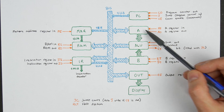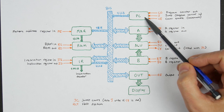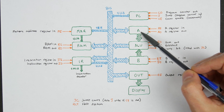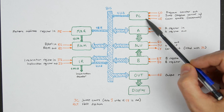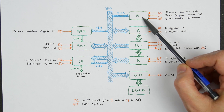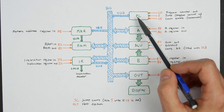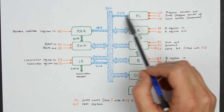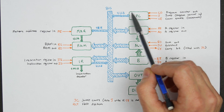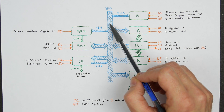In many ways the program counter also works a lot like a register, like the A register or B register — it stores a value. Unlike a general purpose register, the value the program counter stores always has a specific meaning: it's the address of the next instruction we're executing. But like any other register, it needs to be able to put that value out on the bus, and we might want to read a value from the bus to jump to a different address.